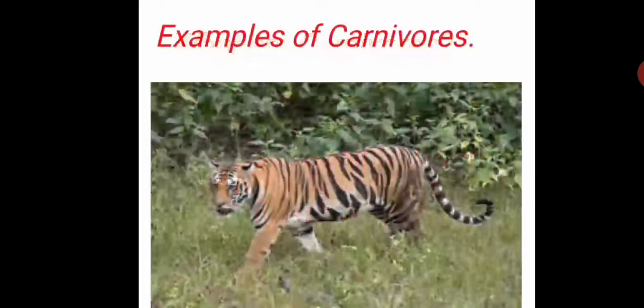Let me tell you examples of carnivores. Some major examples are tiger. Tiger eats flesh — they feed on other animals in the bush, tear them and eat them as their main food. Any animal that eats the flesh of other animals is a carnivorous animal.